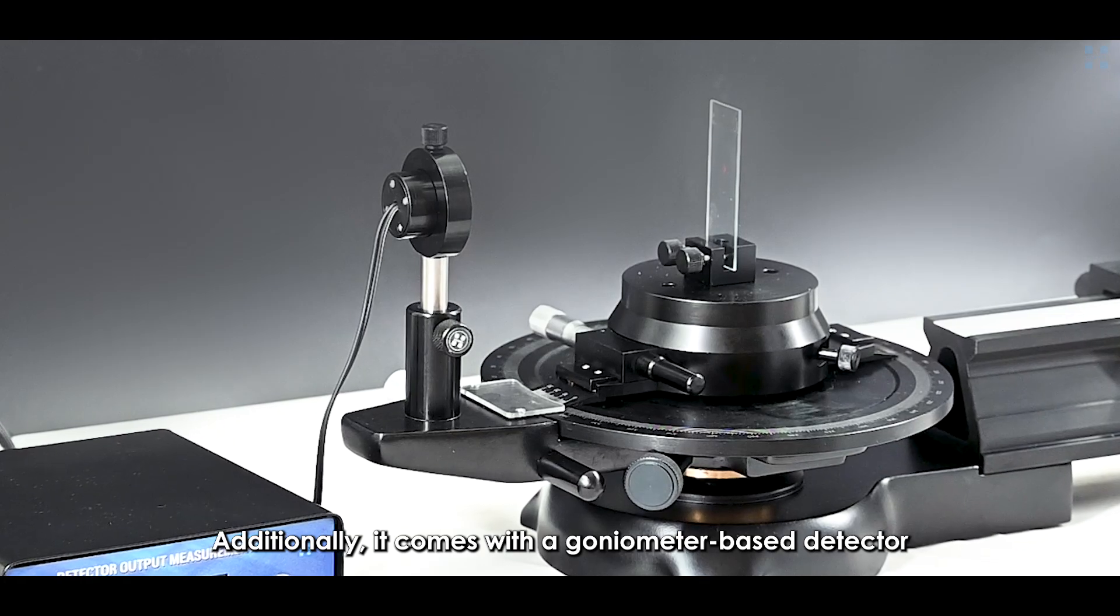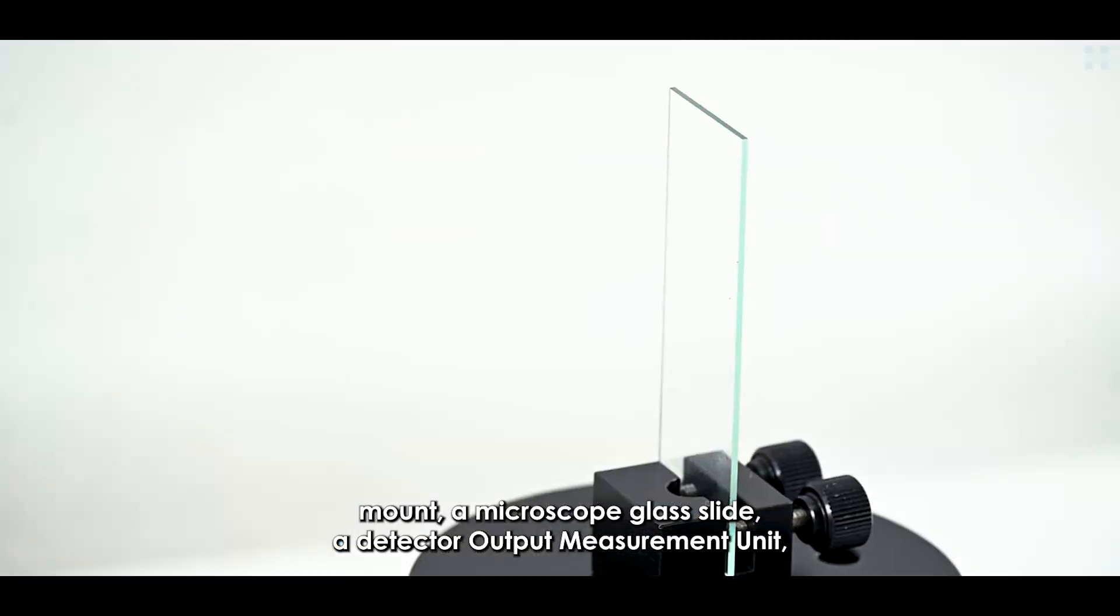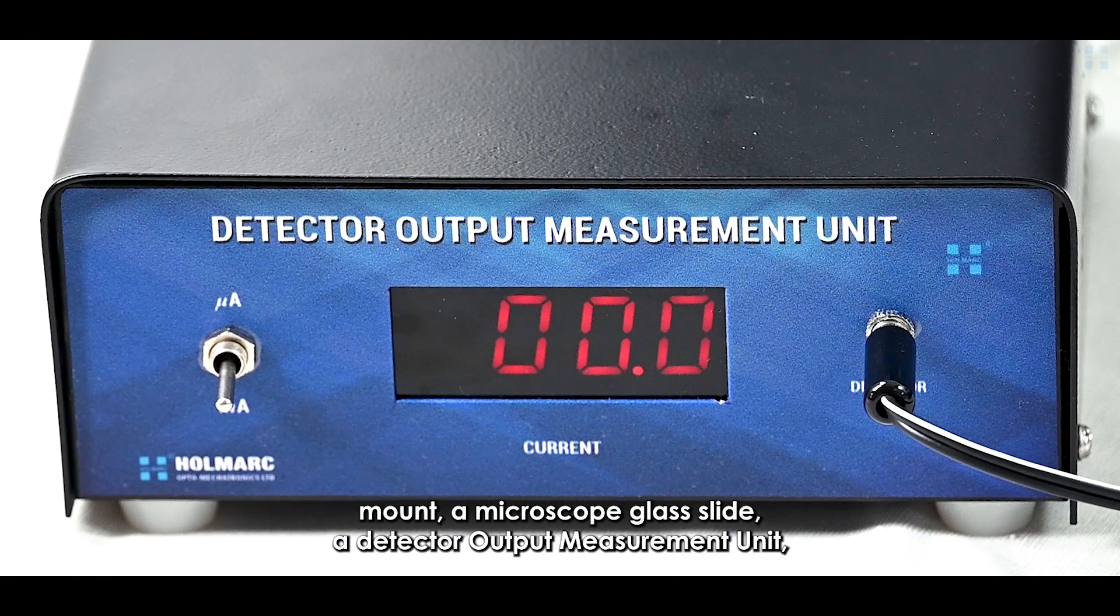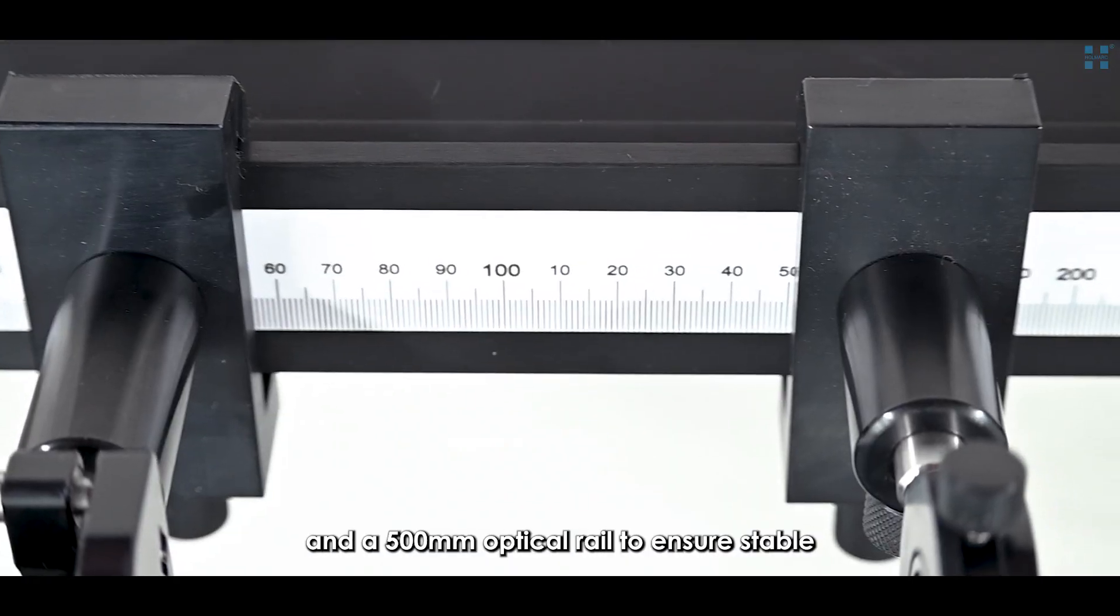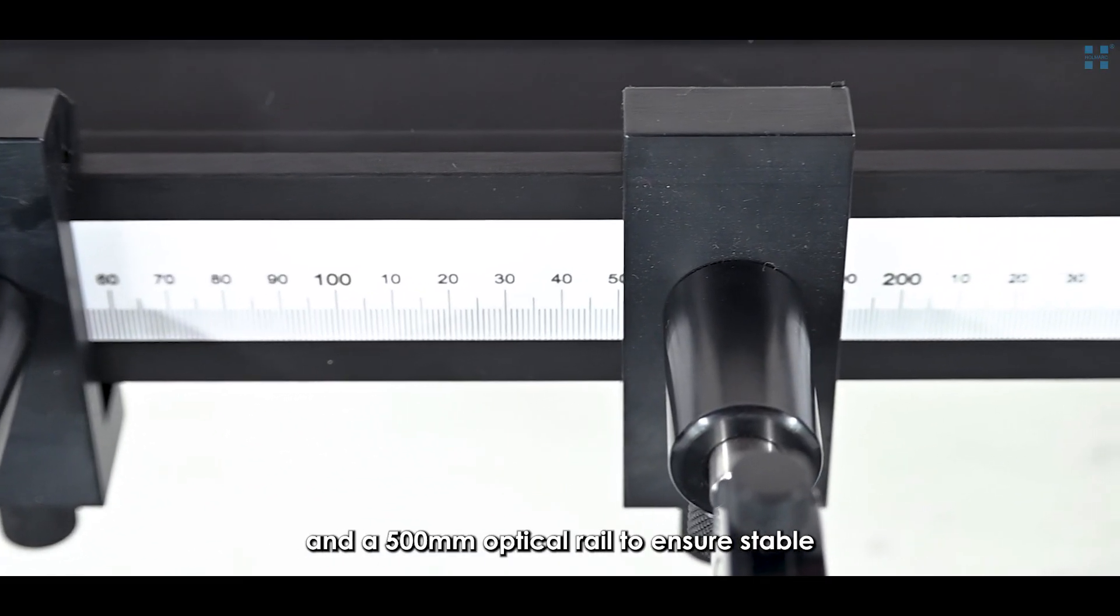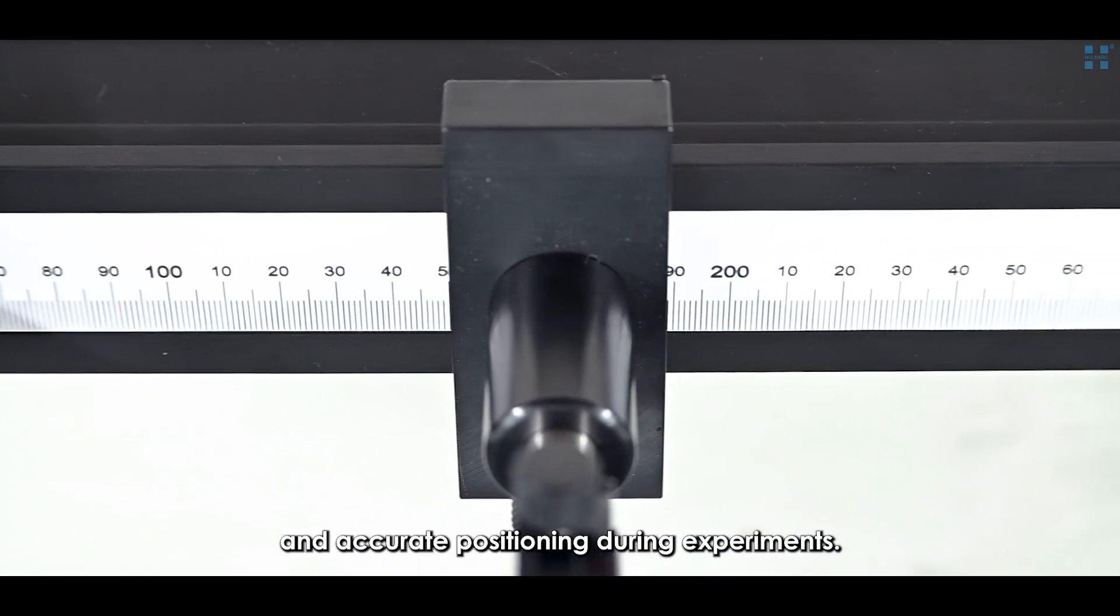Additionally, it comes with a goniometer-based detector mount, a microscope glass slide, detector output measurement unit, and a 500 mm optical rail to ensure stable and accurate positioning during experiments.